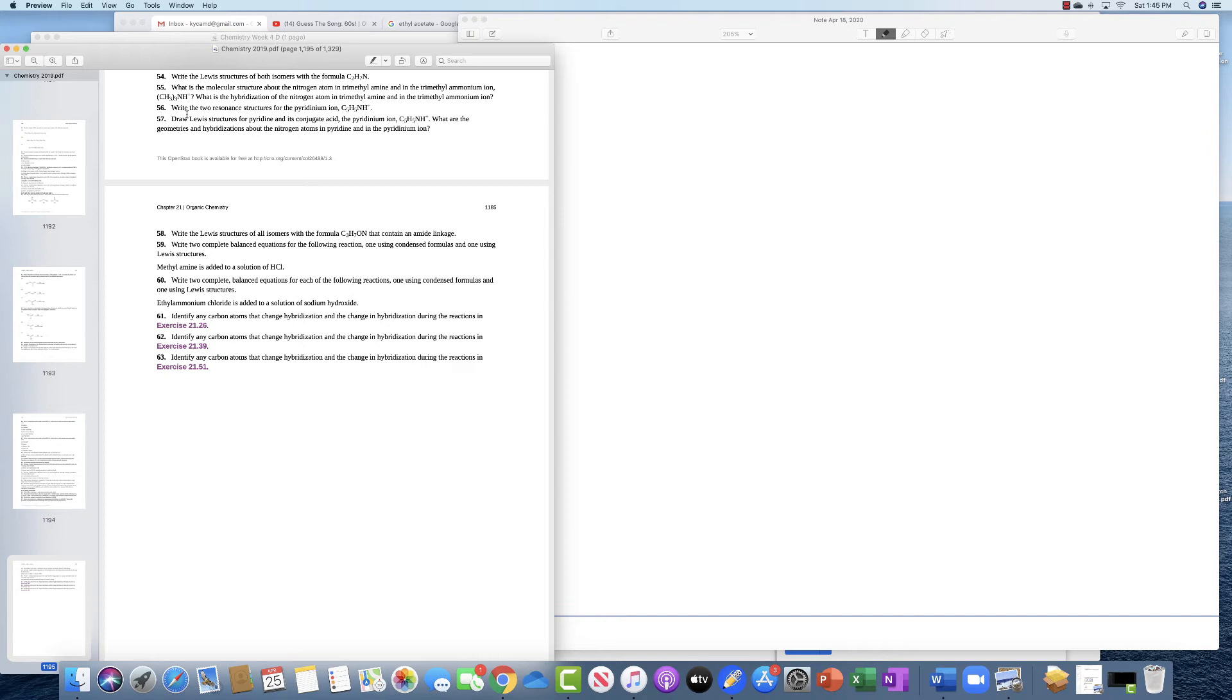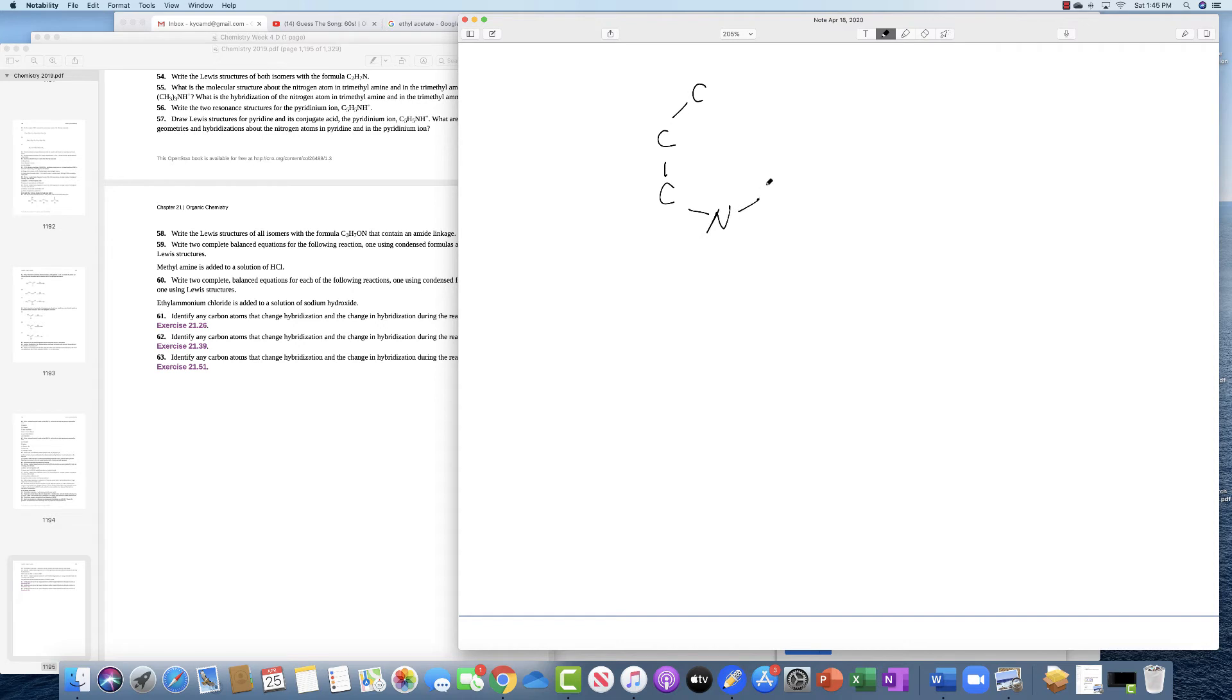Number 48 says write two resonance structures for the pyridinium ion. First of all, what does the pyridinium ion look like? Well, the pyridinium ion looks like benzene but with a nitrogen instead. So it looks something like this: C, C, C, N, C, C. So it looks like benzene, except you have a nitrogen instead of.